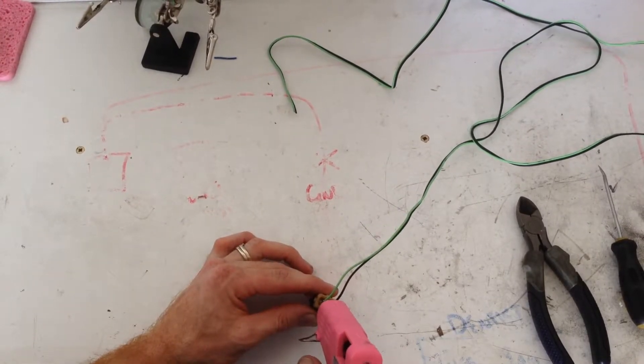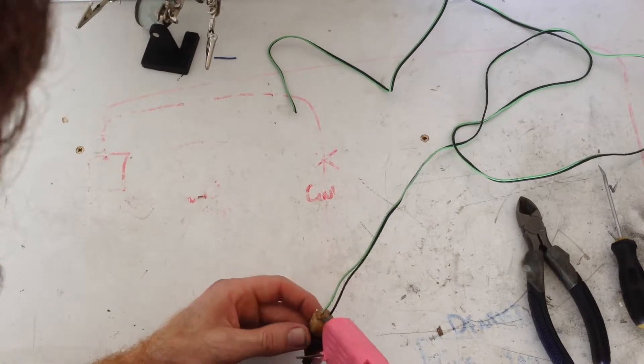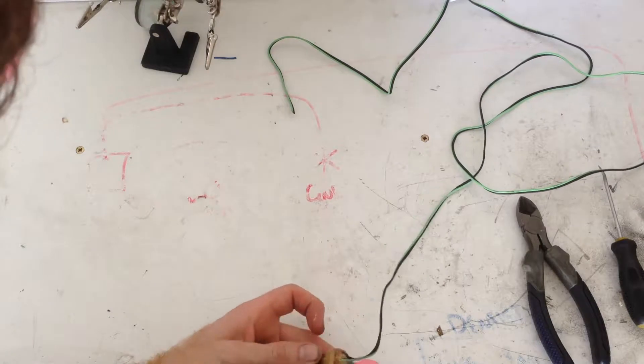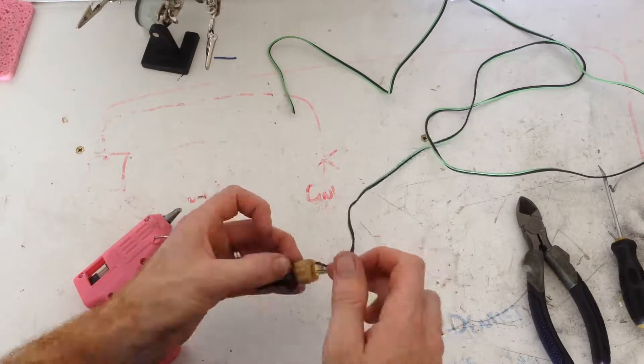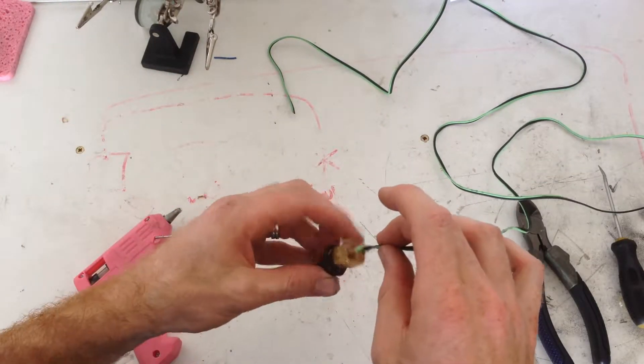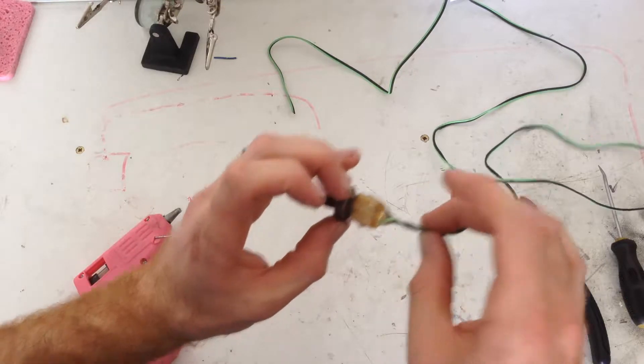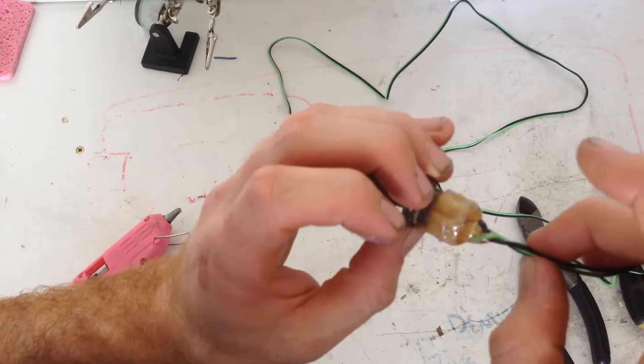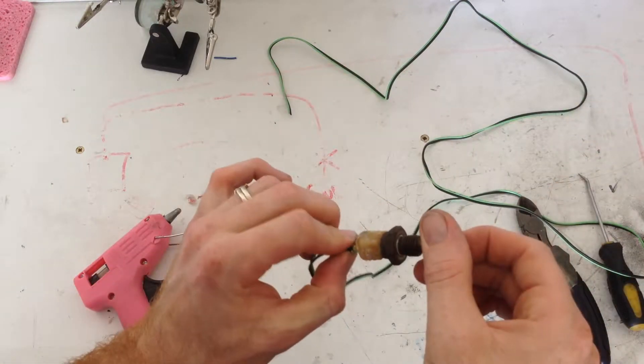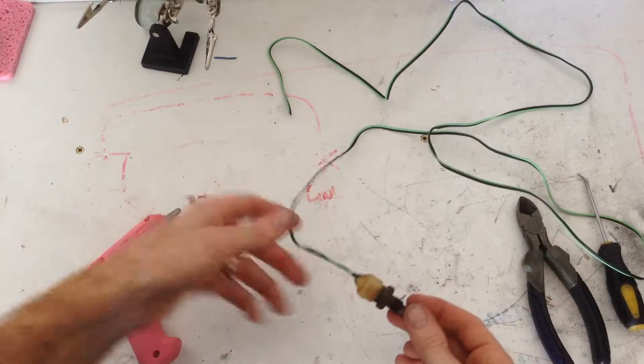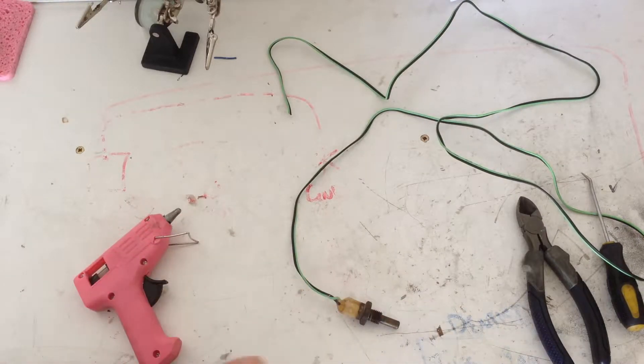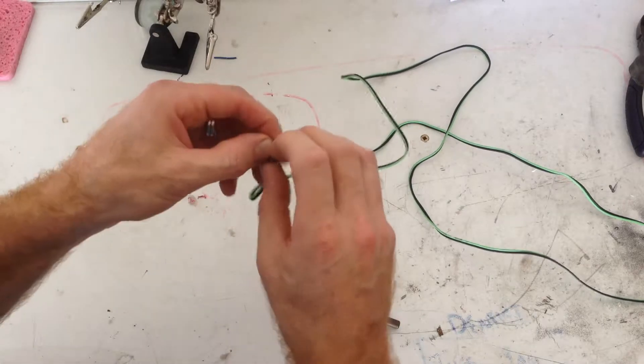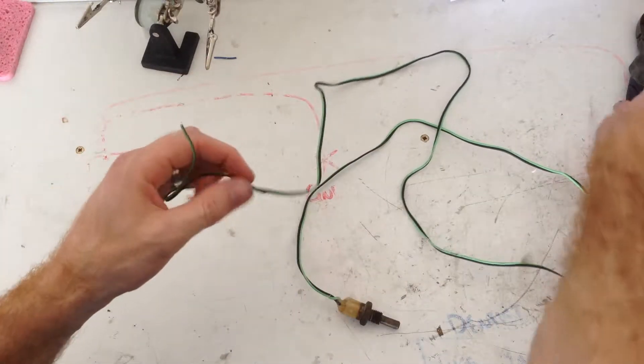Filling, filling. There we go. Yep. It's all sealed. Cool. So now what we do is strip back the ends so we can attach it to the multimeter.